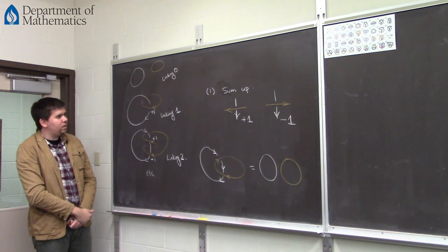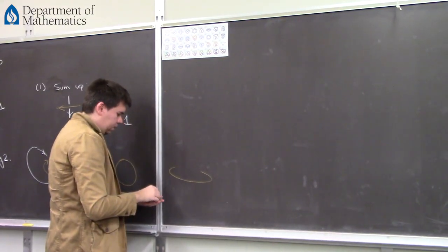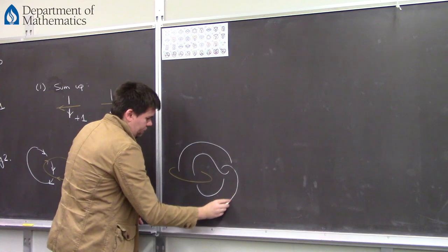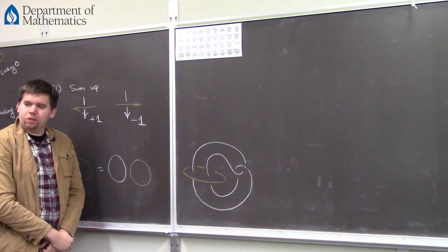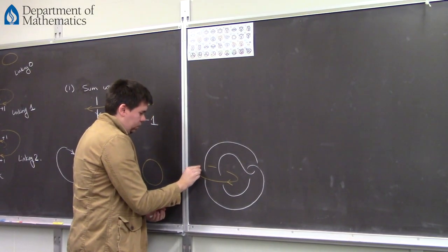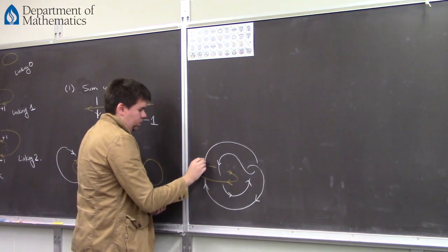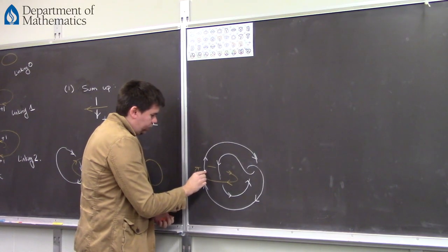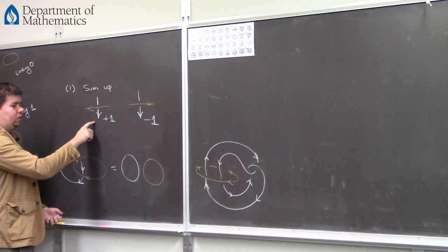We could do a more complicated link to see what happens. What if we take a link like this one? How linked are the white and orange components? We can give it some orientation — give white some orientation. Where does orange pass over white? There are two places where it happens: here and here. At this right location, orange passes over white in this fashion, so it gets a plus one.